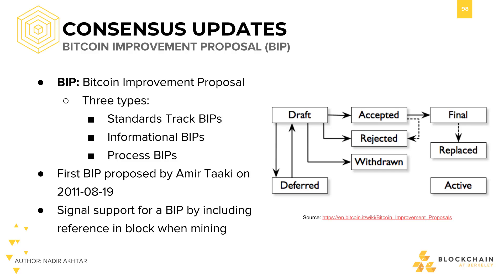In Bitcoin, changes to the protocol come in the form of BIPs, or Bitcoin Improvement Proposals. These can be changes in the network protocol, block or transaction validation, or anything affecting interoperability. This is a way the community votes on changes that they want to support.